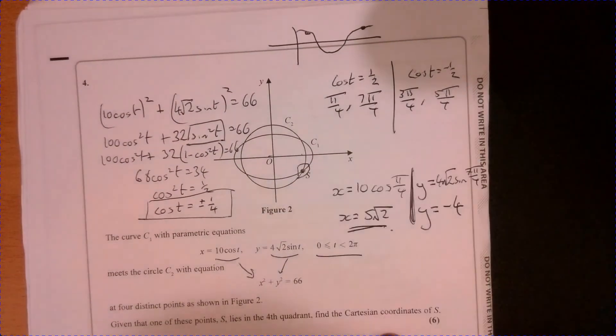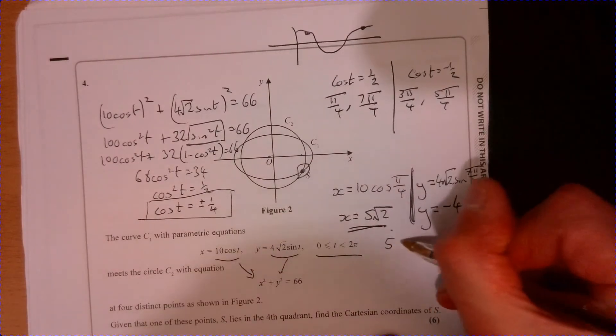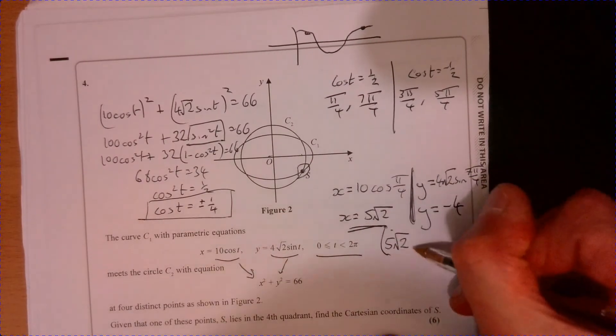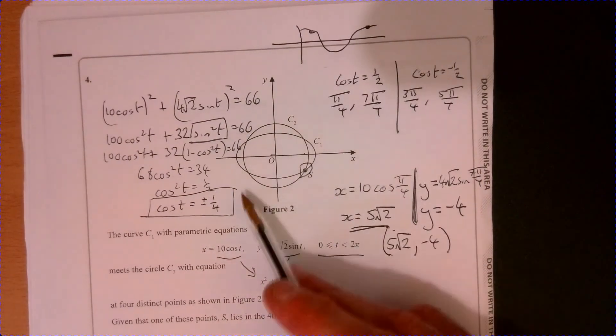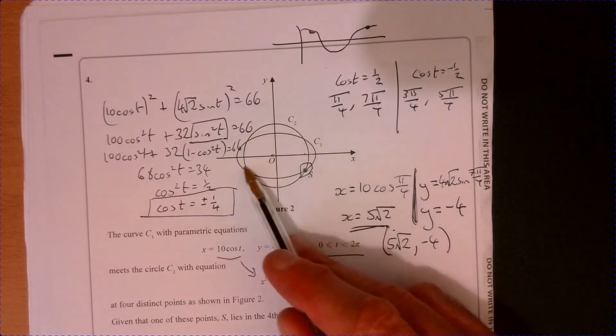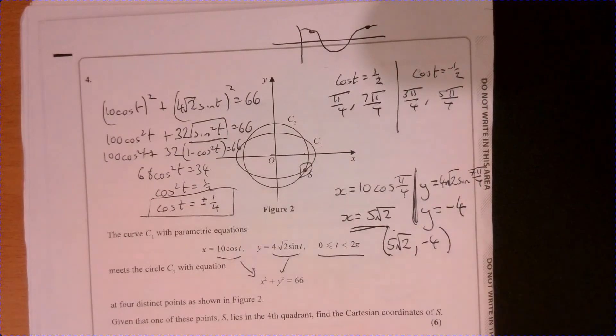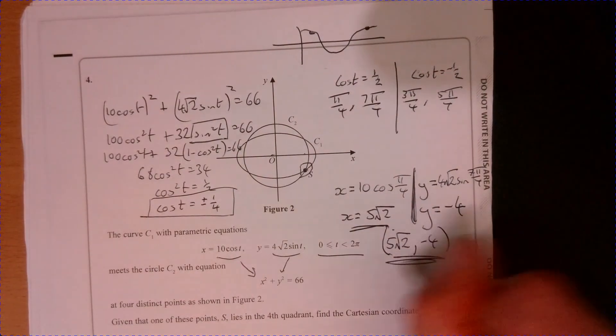And you'll get Y equals minus four. So the coordinate of this point down here is five root two minus four. Now, obviously, we could have explored the other points as well, but we can see, well, we can see what they are because it's nice symmetry going on there, isn't there? Okay. There we are.